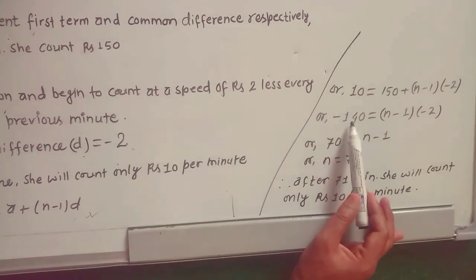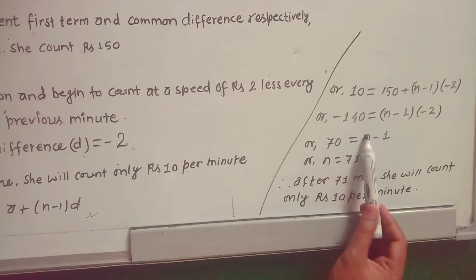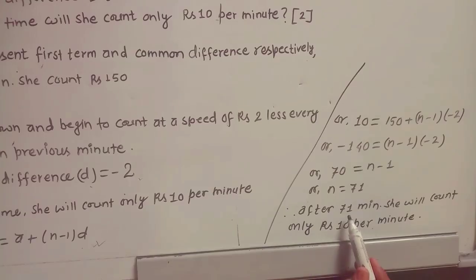n-1 times minus 2, minus 140 divided by minus 2 is 70, this minus 1 is left, which is 71. This means 71 minutes, which in every minute the count is Rs 10. This is the final answer.